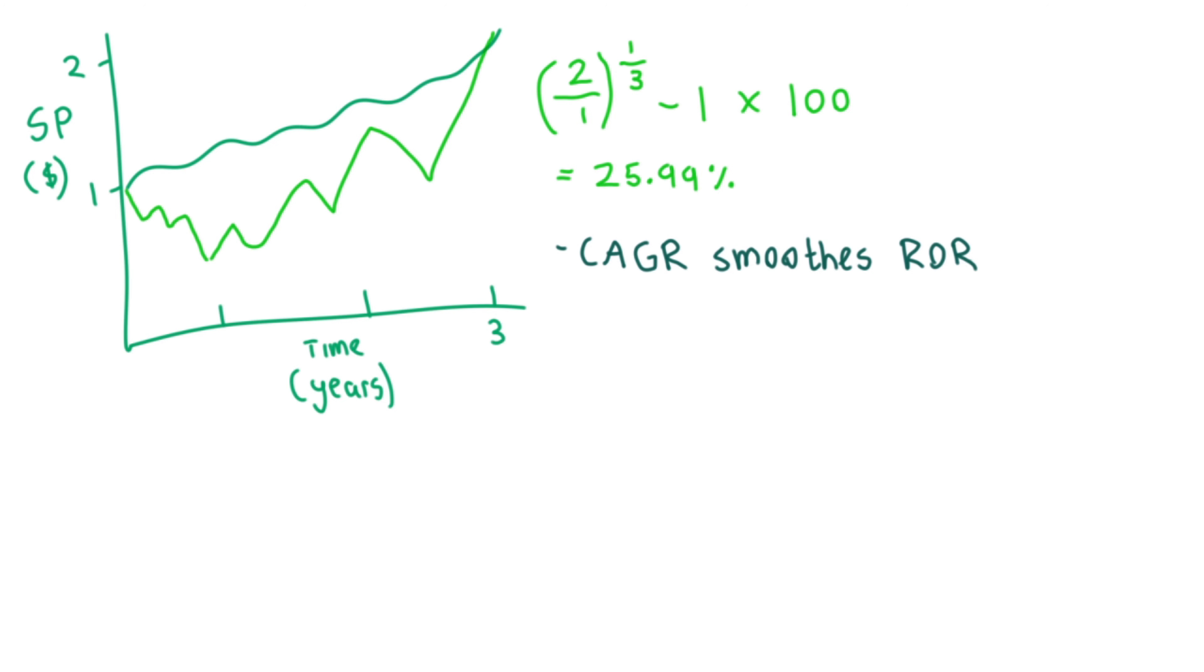This also presents an internal limitation of the CAGR. Because it calculates a smooth rate of growth over a period, it ignores volatility and implies that the growth during that time was steady. Returns on investments are uneven over time, except for assets such as bonds which are held to maturity, bank deposits and similar investments.